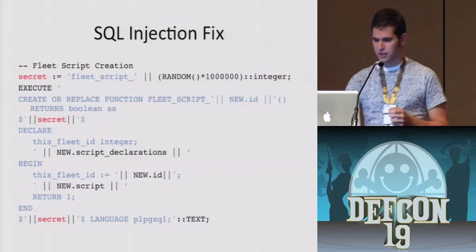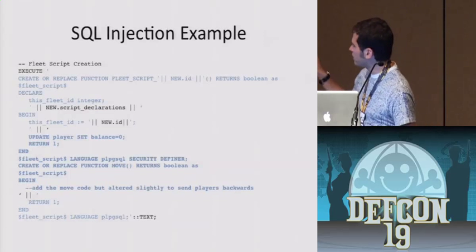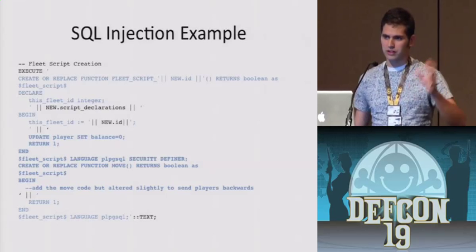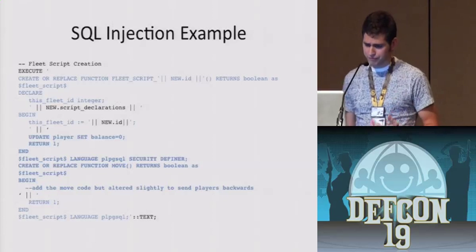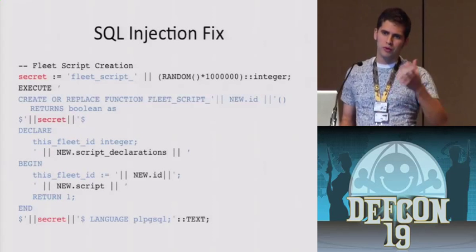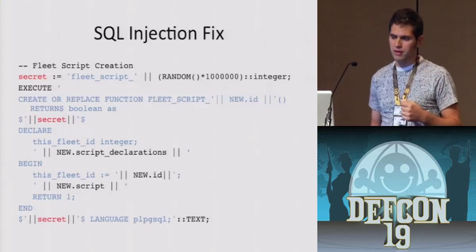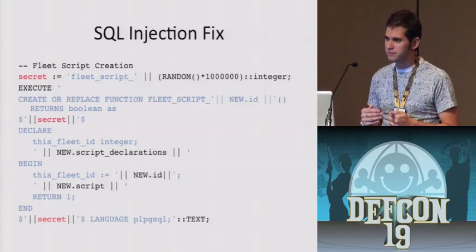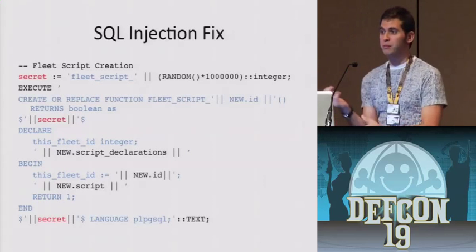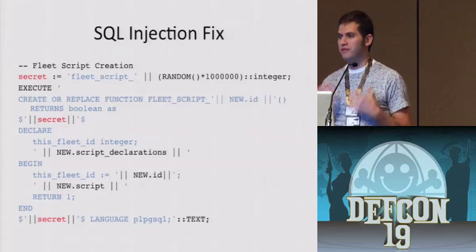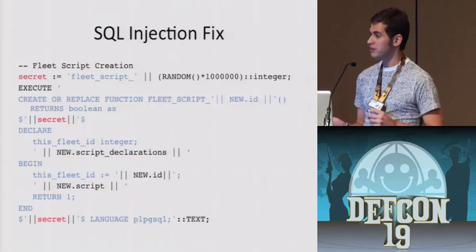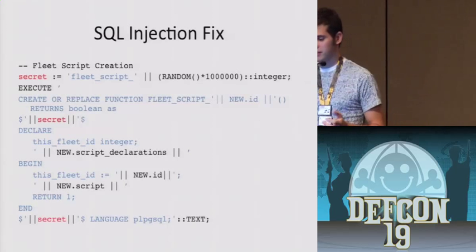This was a bit of a problem, and I wasn't really sure how to fix it — I still don't know if I have. But I like my solution: I just added a secret. Right underneath the initial CREATE OR REPLACE, you have a fleet_script string declaration saying where it starts and where it ends. To fix this, I just made that random. If you don't know how to end the script, you can't forcefully stop it — the creation will just error out. I have had people come to me saying, what if I find a way to throw an exception and have my exception do something? I have no idea if that works — if someone here wants to play around with it, it's DEF CON.